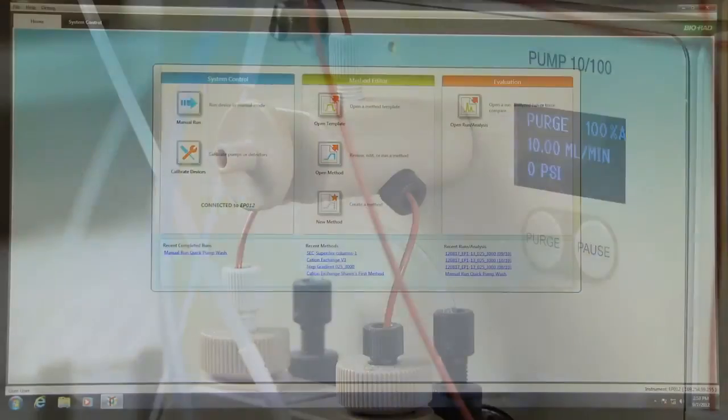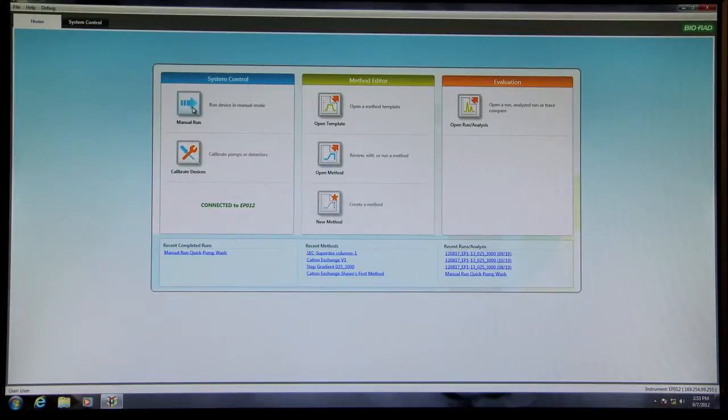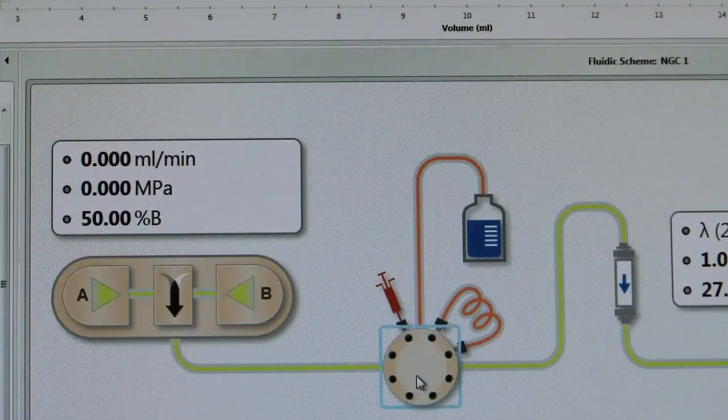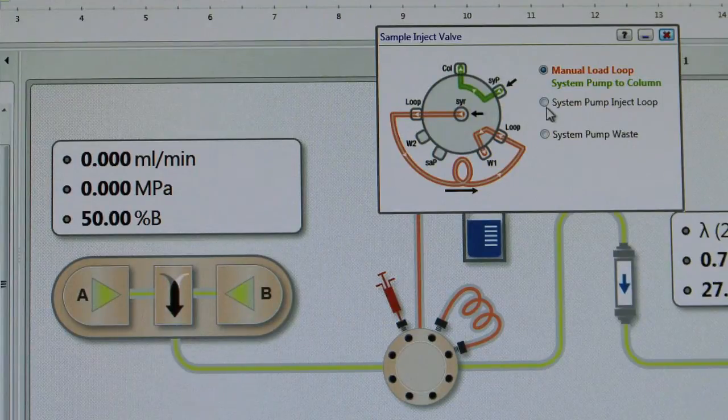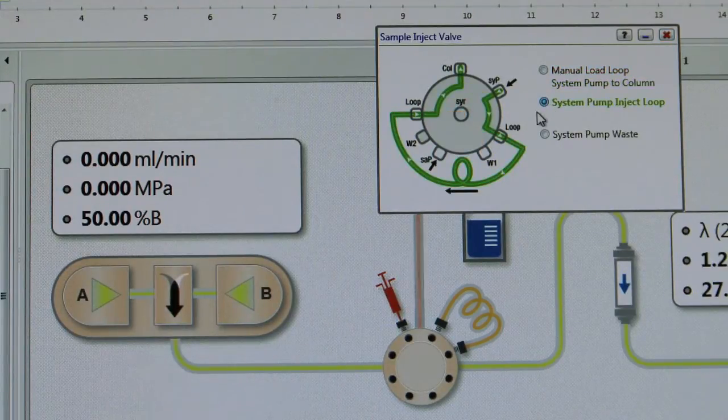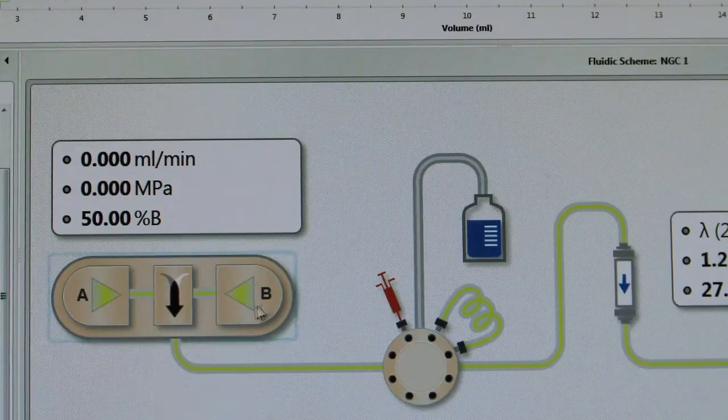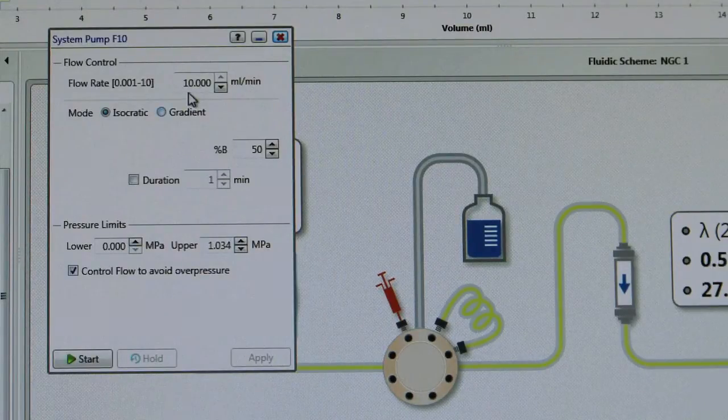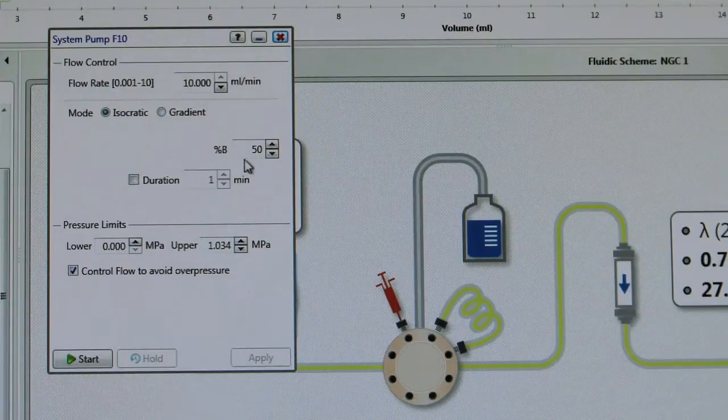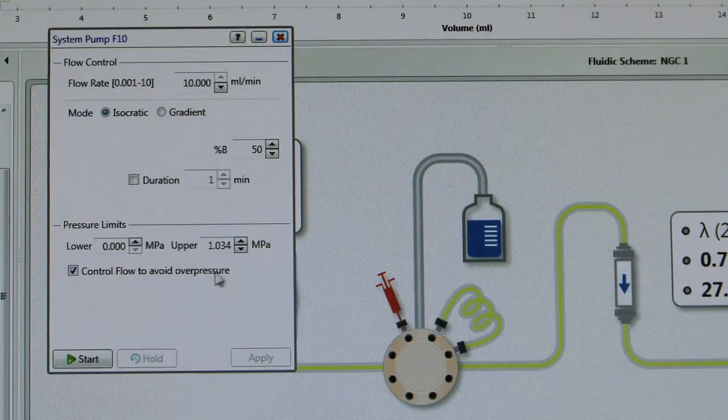To purge the system using ChromeLab, launch the software and select Manual Run on the home screen. Double-click the pump icon. On the software pump faceplate, set the flow rate to the maximum flow rate of the pump. In the case of the F10 pump, choose a flow rate of 10 milliliters per minute. Set %B to 50%.